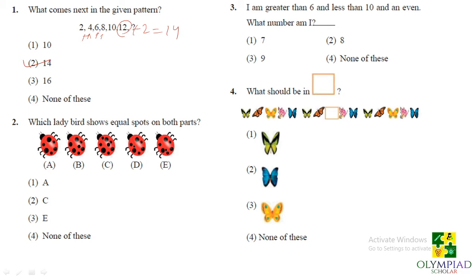So next question, which ladybird shows equal spots on both parts? Both parts means left and right parts. So if we divide it back into 2 parts you will see that in figure A it has got 3 spots on its left and 3 spots on its right. So our answer is A that is option 1.